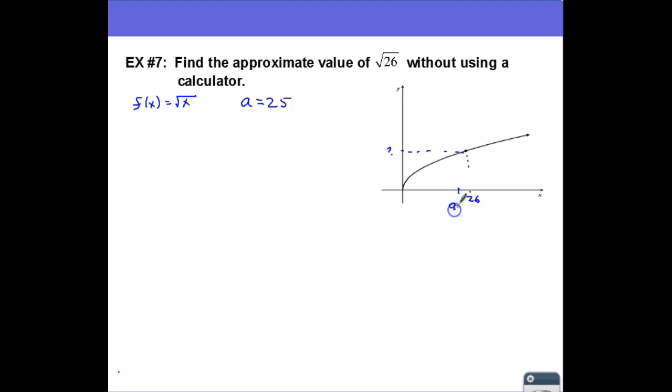So now I've got a equals 25, and going up to our curve and coming back, I can tell you that's going to be 5. So that's good, we've got that. How can I use this to help me approximate the square root of 26?